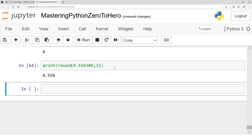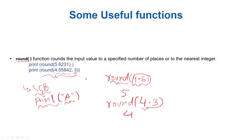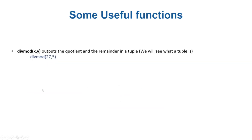That's the round function. Another function is divmod. The divmod function divides and returns both the quotient and the remainder. In the next video we will see divmod in detail, and there are a couple more functions we will see in upcoming videos.